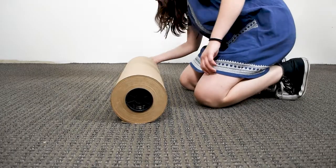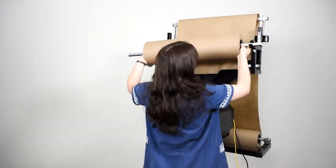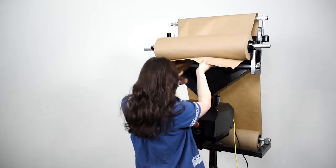To use two rolls at a time, simply slide the support tube through the core of a second roll and place it on the front arms of the frame assembly. Then repeat the previous steps.